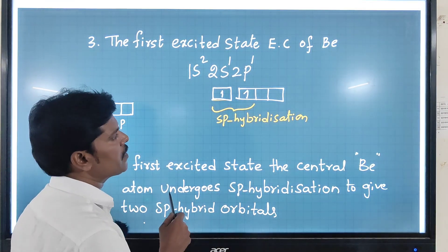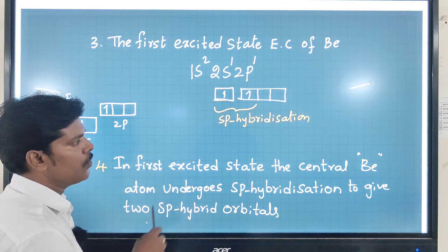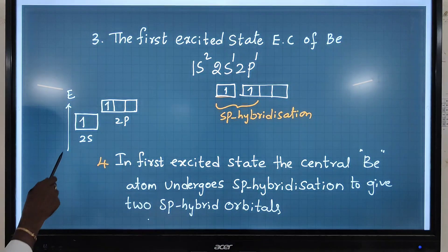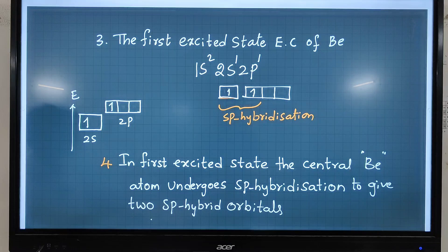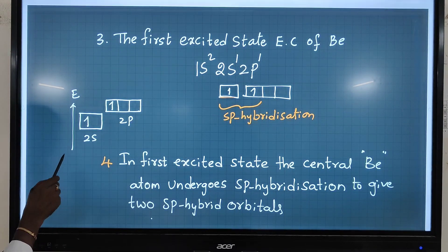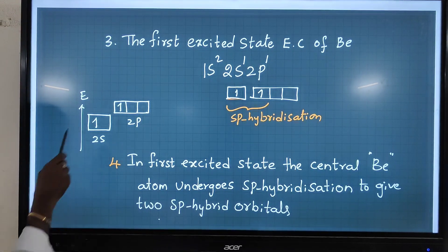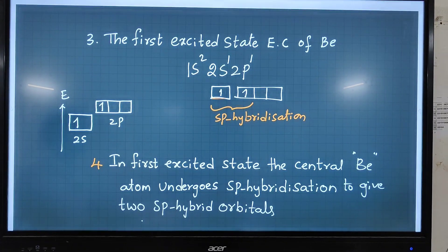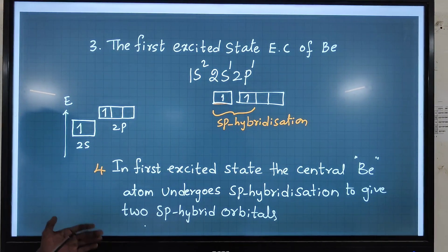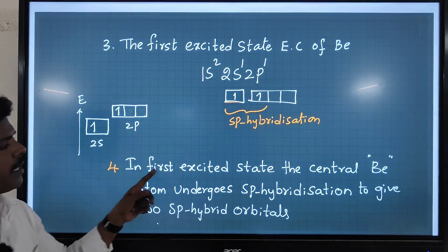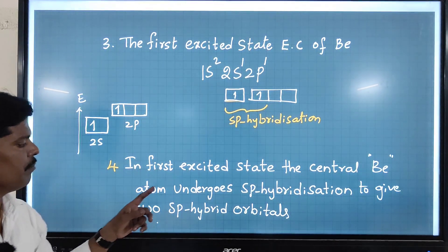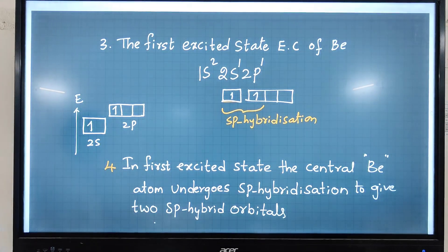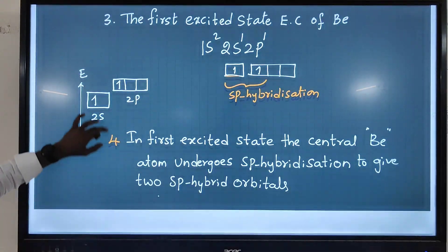These two orbitals intermix together to form sp hybridization. Before intermixing, the energies of 2s and 2p are slightly different. After mixing, the sp hybrid orbitals have the same equal energy. In the first excited state, the central Be atom undergoes sp hybridization to give two sp hybrid orbitals.